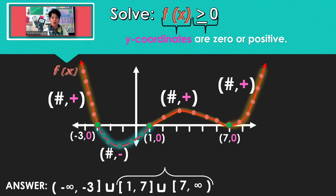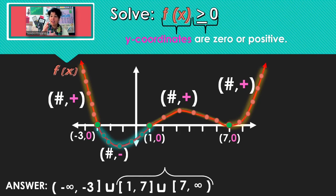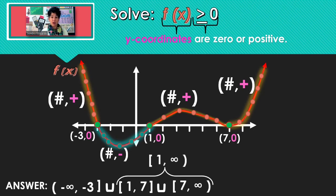So there's no need to break up this interval since 7 is not being left out. We just want to say: let's use the number 1 through infinity.